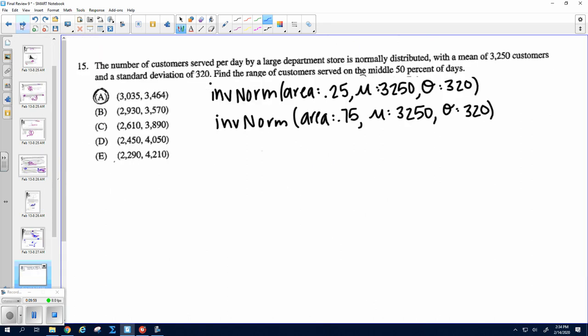Okay, number 15, we want the middle 50%. They do say it's normally distributed. So the middle 50% means, like, from Q1 to Q3. And so if I do inverse norm, area 0.25, mean and standard deviation of what they tell me, and then inverse norm 0.75 with our mean and standard deviation that they give us, you get A, and that is the middle 50%.